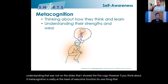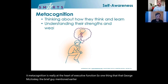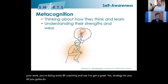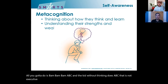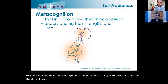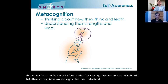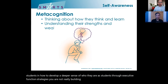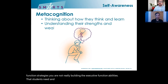George McCloskey said something that really stuck with me: if a kid comes in for EF coaching and you say, 'I've got a great EF strategy for you — just do A, B, C,' and the kid without thinking does A, B, C, that is not executive function. That's not lighting up the front of the brain that governs executive function. The student has to understand why they're using that strategy and why it will help them accomplish a goal. If you're not engaging students in how to develop a deeper sense of who they are, you are not really building the executive function abilities that students need.